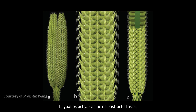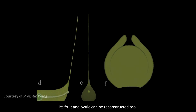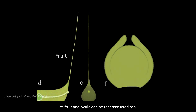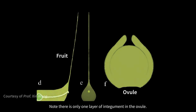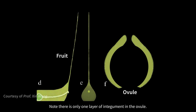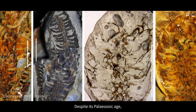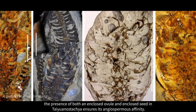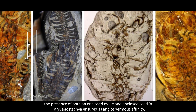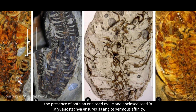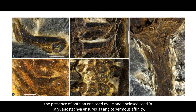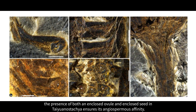Tyuanostechia can be reconstructed as shown. Its fruit and ovule can be reconstructed too. Note there is only one layer of integument in the ovule. Despite its Paleozoic age, the presence of both an enclosed ovule and enclosed seed in Tyuanostechia ensures its angiospermous affinity.